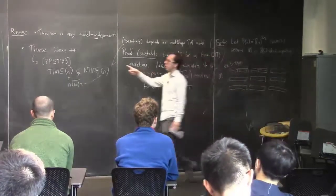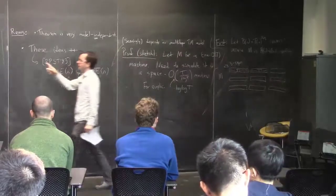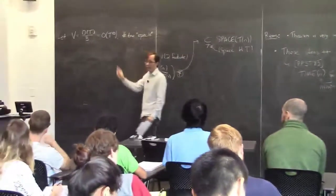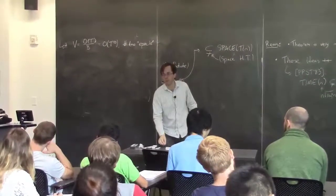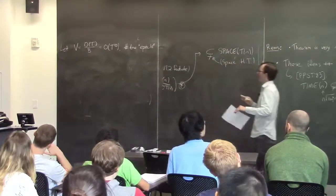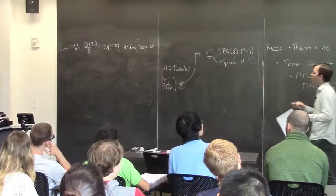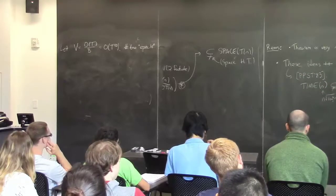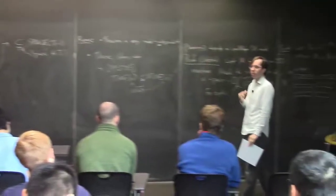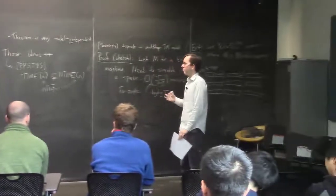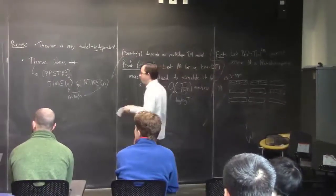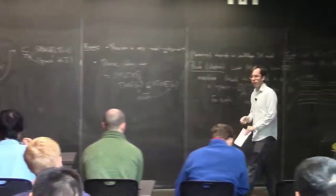So within each epoch — of which there are V = T^(1/3) — heads stay inside blocks. Remember these parameters: B is the block size = T^(2/3), and there are T^(1/3) epochs. Any questions so far?